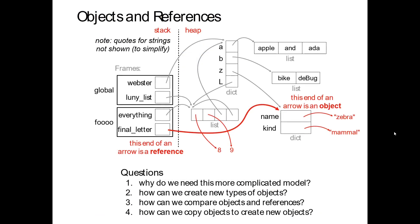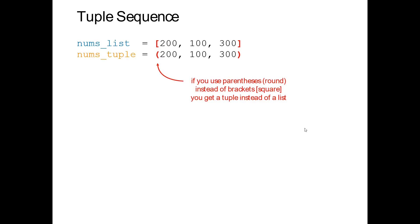This quick review motivates why we want to look at this complicated memory model. We're going to talk about creating new types of objects — specifically the tuple, the named tuple, and the record class. We'll also talk about how we can compare objects and references now that we have this more complex picture.